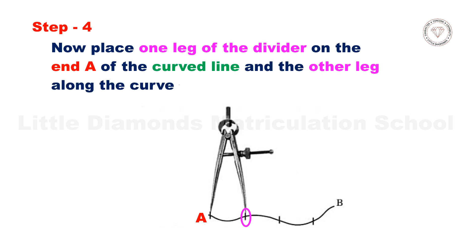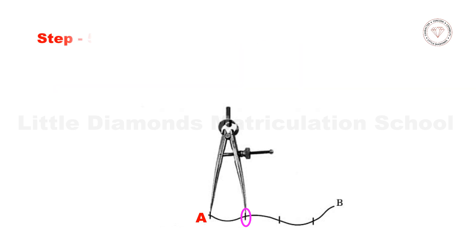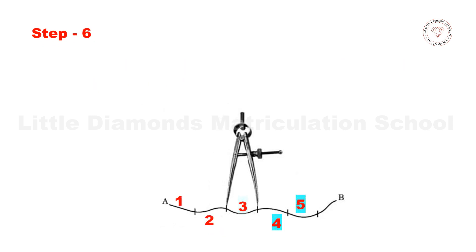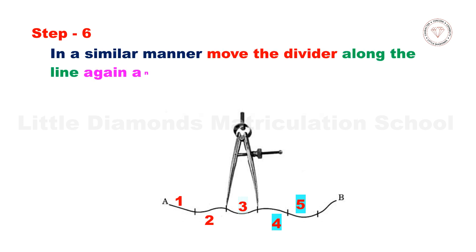Step 5 - mark the position of the other end forming a segment of 1 centimeter. Step 6 - in a similar manner, move the divider along the line again and again, cutting the curved line into a number of segments, say 5, of equal length 1 centimeter.